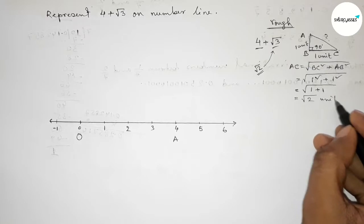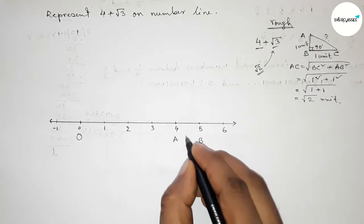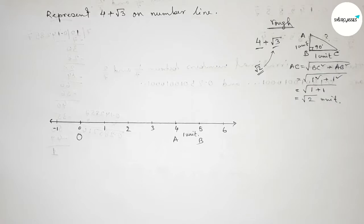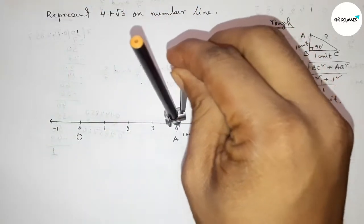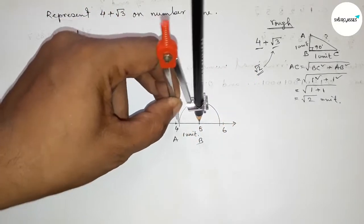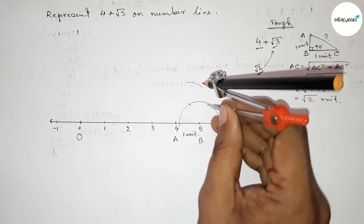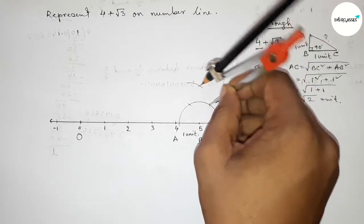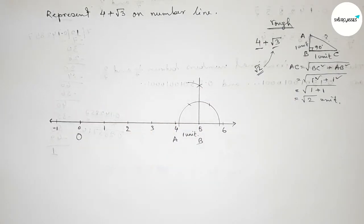Now applying this concept from 4 to 5. Taking point B at 5, which is one unit length from A. We have to construct a 90 degree angle at point B using a compass. Putting the compass on point B, taking any length and drawing an arc, then putting the compass at the new points with the same length and cutting arcs to construct the 90 degree angle.